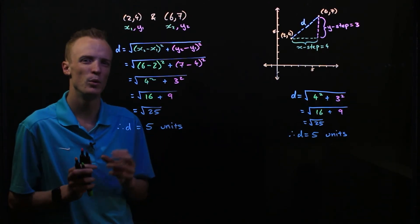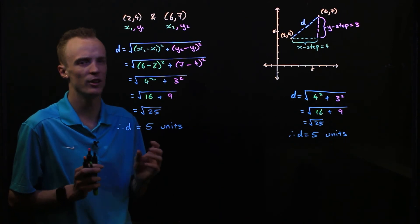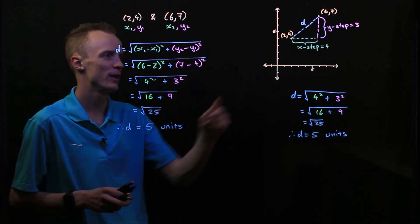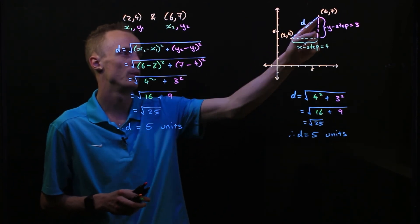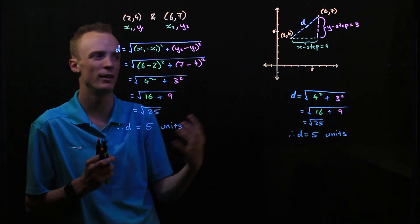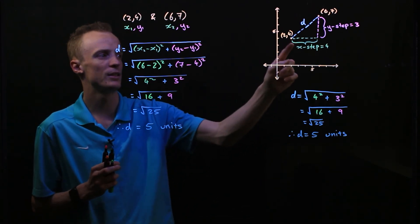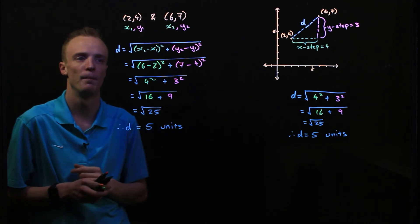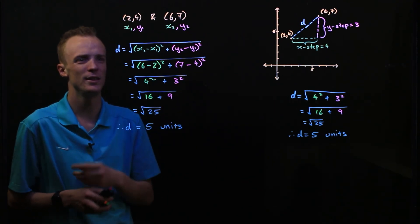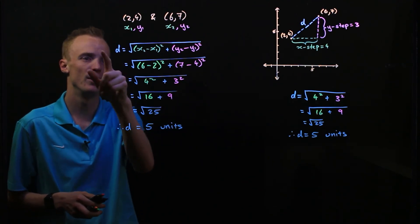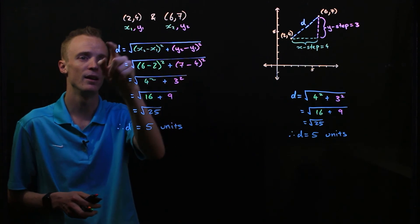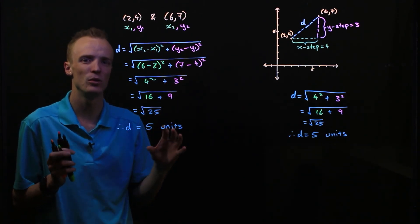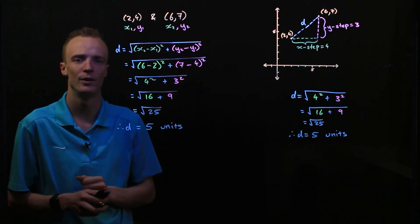What's important here is that our distance formula actually comes from Pythagoras theorem. We form a right angle triangle between our two coordinates by considering the x-step and the y-step. We can use this distance formula to find the distance between any two sets of coordinates.